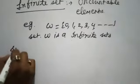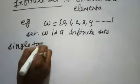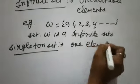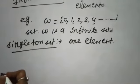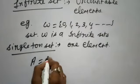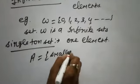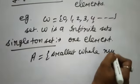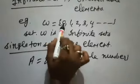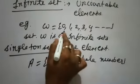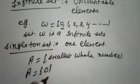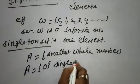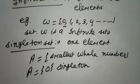After infinite set, we will understand about singleton set. Singleton set means it has only one element — by the name also we can identify it has only one element. For example, set A is the set of the smallest whole number. Whole numbers are 0, 1, 2, 3, 4, up to infinite. The smallest whole number is 0, so set A has only one element, that is 0. This is known as singleton set — singleton set means only one element.